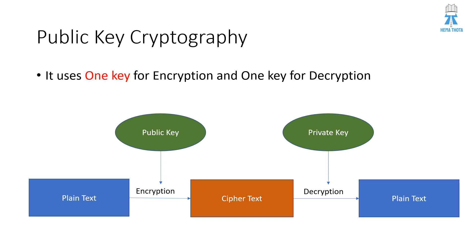In cipher text, encryption can happen in different ways — such as block cipher, stream cipher, AES cipher, and DES cipher. These are all types we need to go through in detail, but this overview is sufficient for this session.